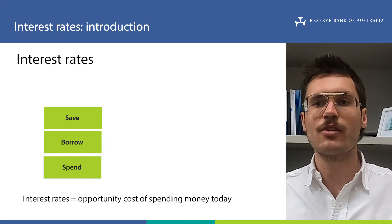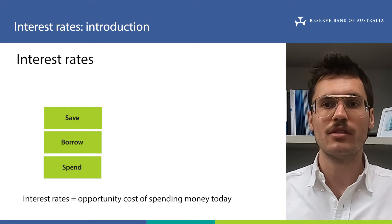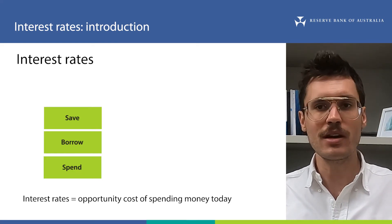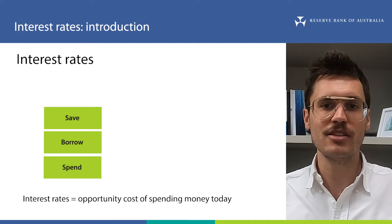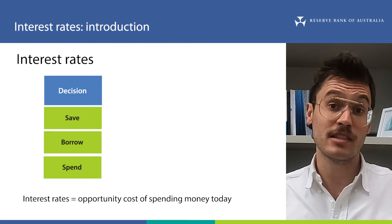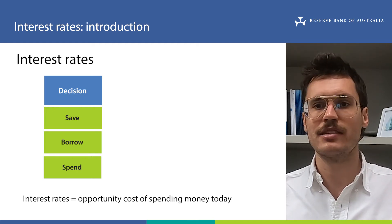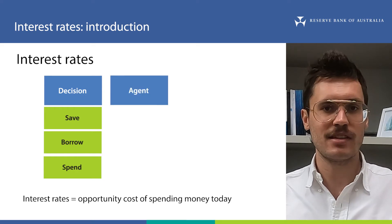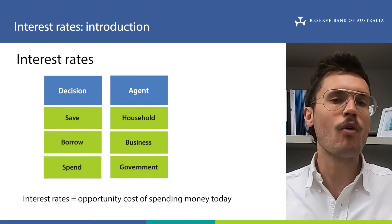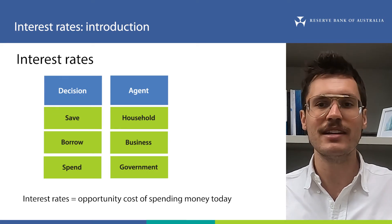So in Australia and around the world, there are many, many different interest rates that you'll see reported in the news. We can simplify things by putting them into groups. One grouping is based on the type of decisions interest rates influence us to make around saving, borrowing, and spending money. It also matters who is doing the saving, borrowing, and spending. Different agents in the economy — so households, businesses, and governments — all face different interest rates when they choose to save or borrow for a variety of reasons.